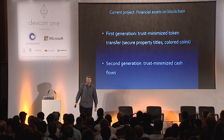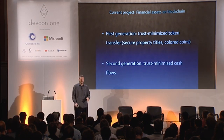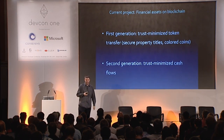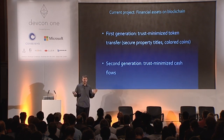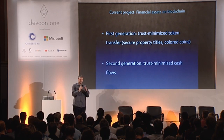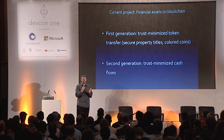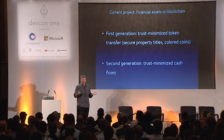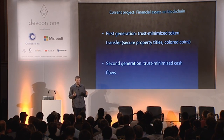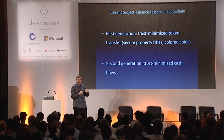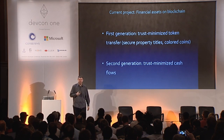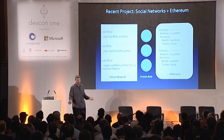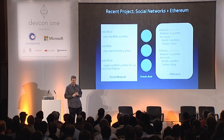The current project I'm working on is financial assets on the blockchain. The first generation, which I invented in 1998, is the trust-minimized token — you trust-minimize the transfer of tokens from one person to another. I call these secure property titles; the most common name now is colored coins. But there are other and even more important things you want to secure with financial assets. The second generation is trust-minimizing the cash flows — the dividends, the coupons, et cetera. That's what you really want from your financial assets. That's what I'm working on now with my partner Donald McIntyre.